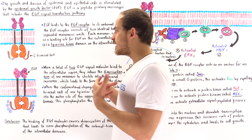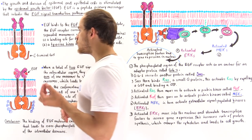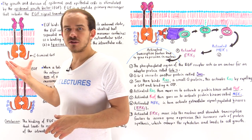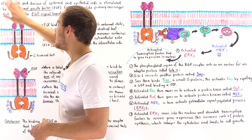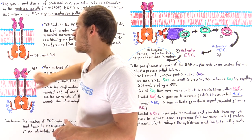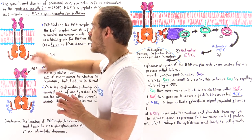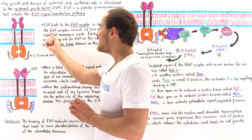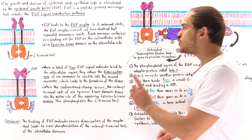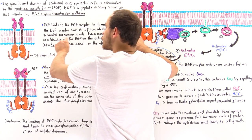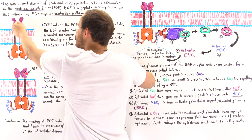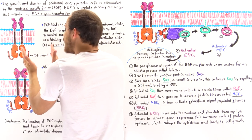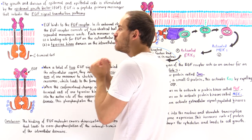Let's begin by focusing on the actual structure of the protein receptor that binds EGF molecules. We have the cell membrane with the outside and inside of the cell. In its unbound state, before the EGF molecules bind, the EGF receptor consists of two identical but separated monomeric units — monomer one and monomer two — not attached by any type of bond.